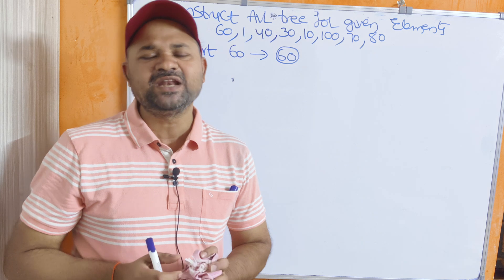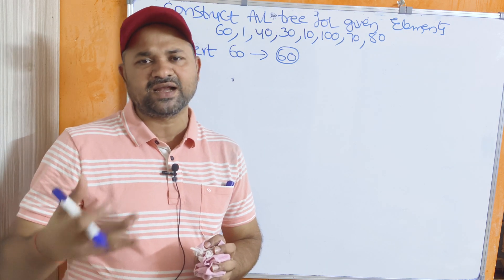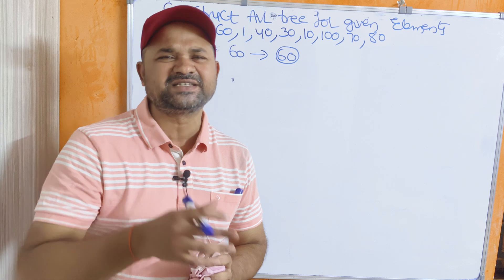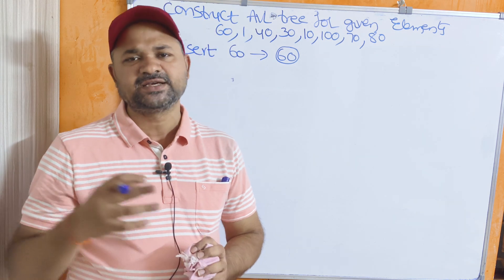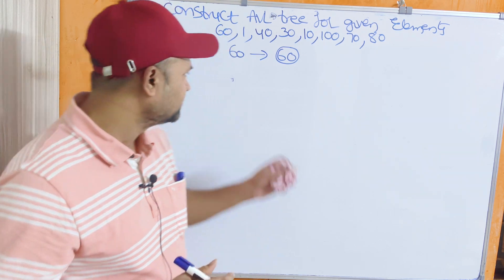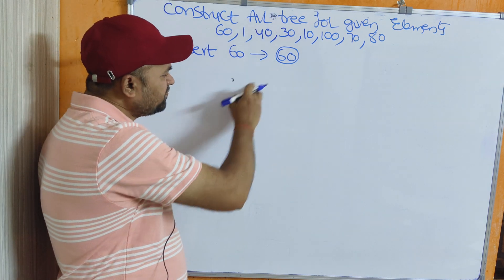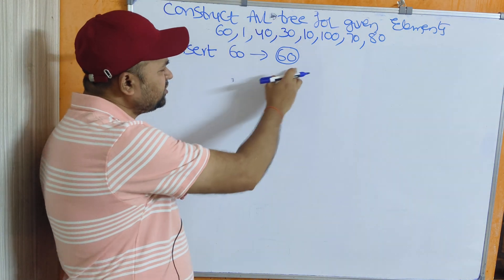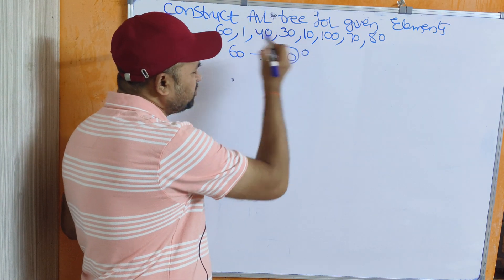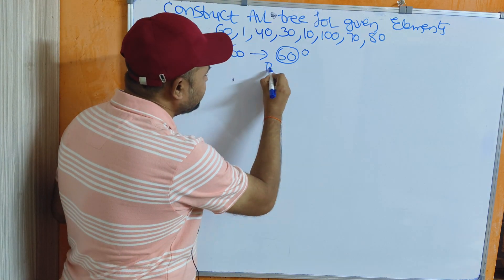We have mainly four rotations: LL, RR (single rotations) and LR, RL (double rotations). For inserting 60: the height of the left subtree is 0, the right subtree is 0, so the balance factor is 0. We can say this is a balanced tree.